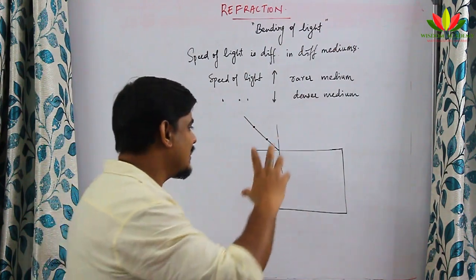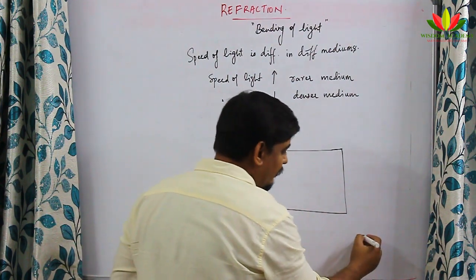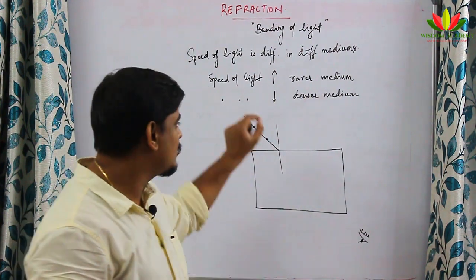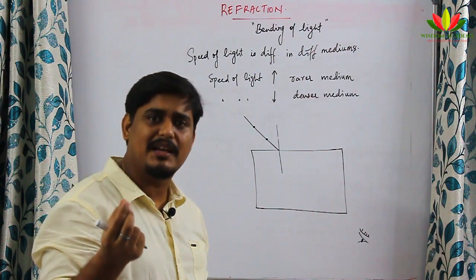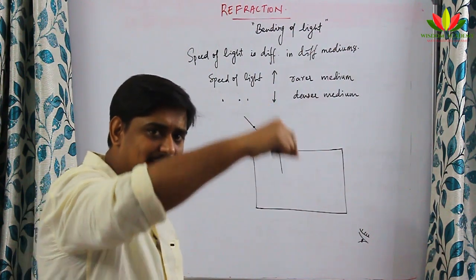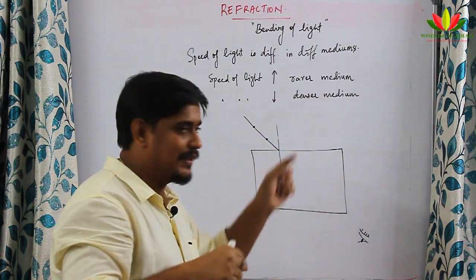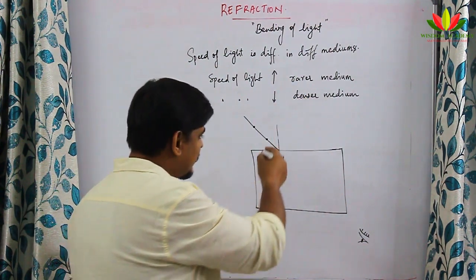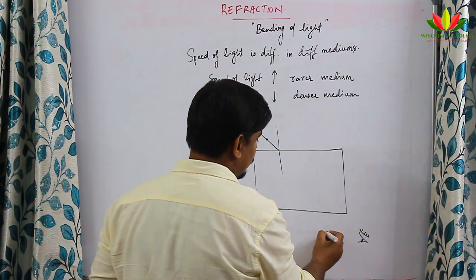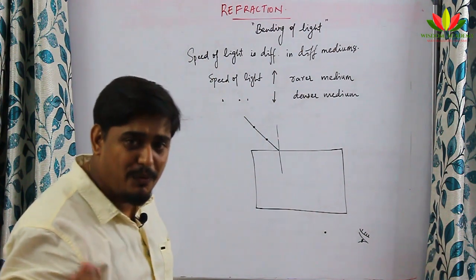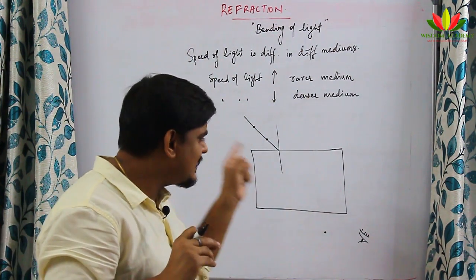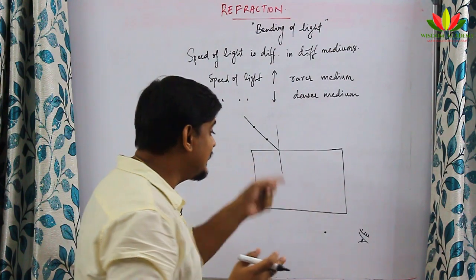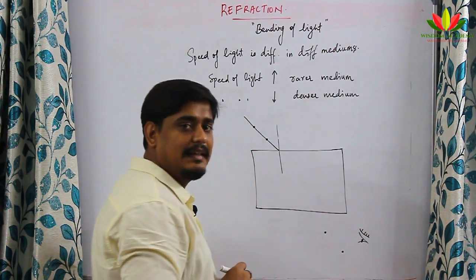We place the glass slab back and view from the other side. We must view the two drawing pins and carefully place a third pin in alignment with them. Based on this alignment we place the third pin, then take a fourth pin and place it in alignment with all three pins.